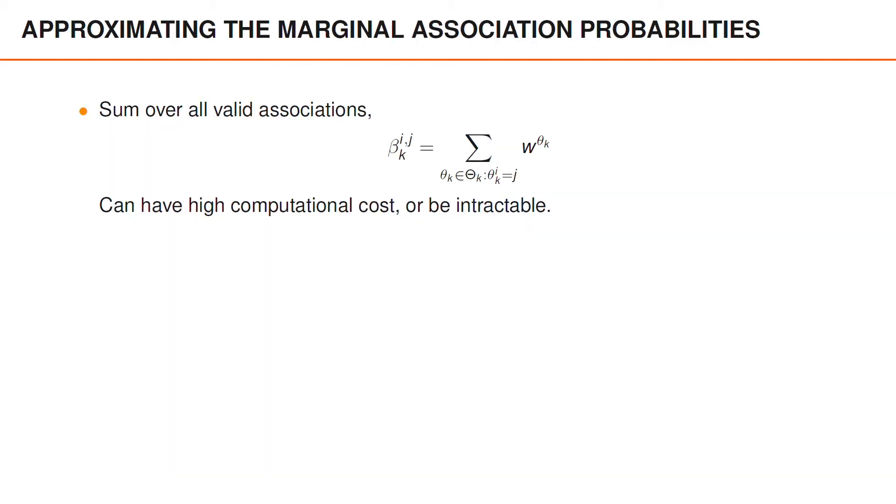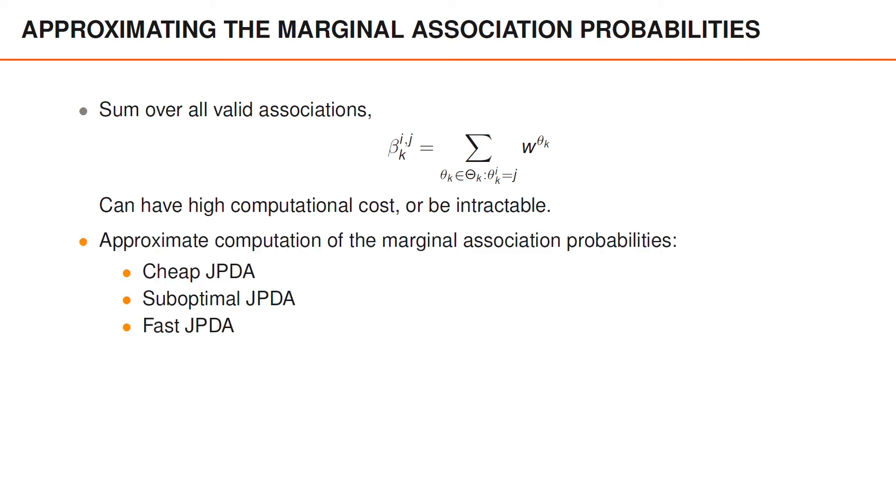We noted earlier that computing the marginal association probabilities involves the sum over all valid associations. And as we know, this can have very high computational cost, or even be intractable. In object tracking literature, some methods can be found for approximating the marginal association probabilities.